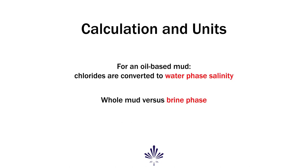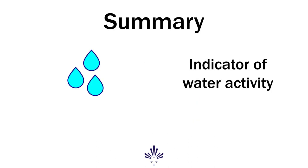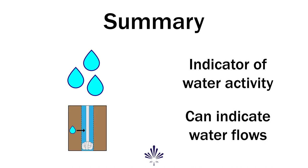For an oil-based mud, the chloride value in the whole mud is converted to water phase salinity, or the chlorides of only the brine phase. Water phase salinity is usually reported in parts per million, although sometimes it's referenced as weight percent salt or in milligrams per liter. Chlorides are an indicator of the water activity of the fluid, an important consideration to limit water movement into and away from the formation in sensitive wells. Chlorides can also indicate a water flow by a drop in high salinity fluids or an increase in low salinity fluids.